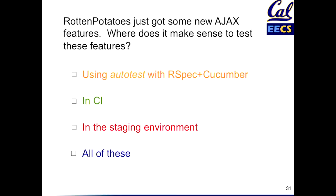So here's a question about CI. Rotten Potatoes just got some new Ajax. Where does it make sense to test the Ajax feature? Using the standard autotest environment like you've been doing? In a CI environment? In a staging environment — which is an environment very much like production but often smaller, meant to mimic in every possible way the actual production software stack? Or should you test it in all of these environments?